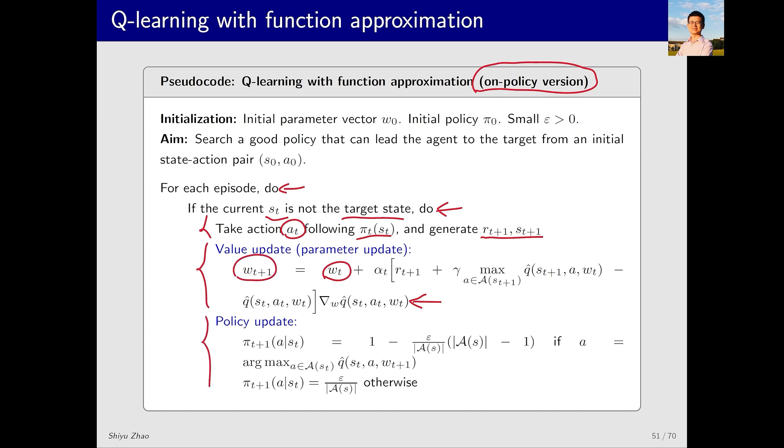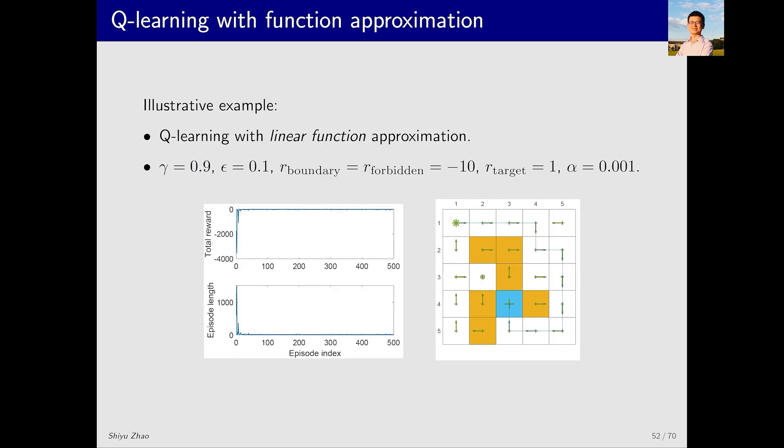Next is the value update, which follows the algorithm we introduced earlier. Similarly, we need to update the parameters here. After that we can update the policy. In state S_t, I calculate the Q values by substituting different actions a_t and seeing which Q value is the largest. I assign a higher probability to the action with the largest Q value, while actions with smaller Q values get smaller probabilities. This policy is also an epsilon-greedy policy.